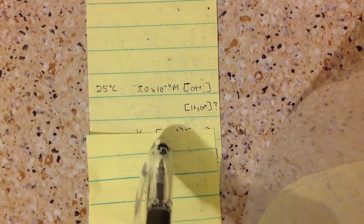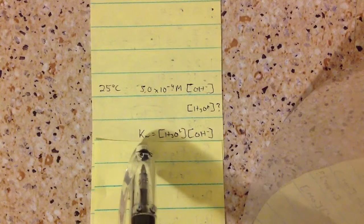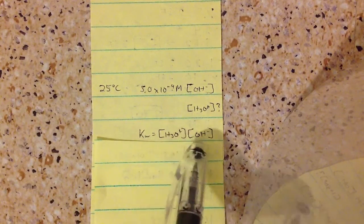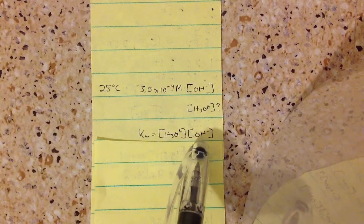You would have the formula, which is the ion product constant is the product of hydronium and hydroxide.